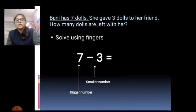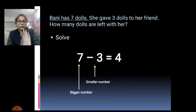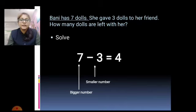Using finger, 7 minus 3 is equal to 4. Same way, I have 5 candies.